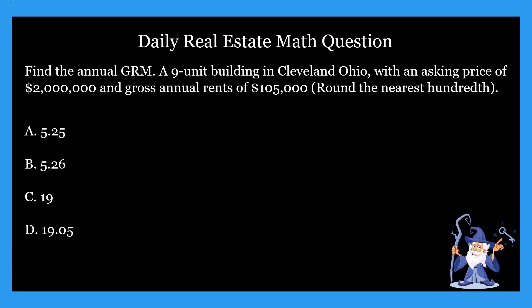So what is GRM — what is gross rent multiplier? It's the ratio of the price of a real estate investment to its annual rental income before accounting for expenses like property taxes, insurance, and utilities. More specifically, it's a measure of the value of an investment property obtained by dividing the property's sale price by its gross annual rental income. The formula is: GRM equals price divided by gross rental income. That's the formula you need to know for all GRM problems.